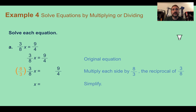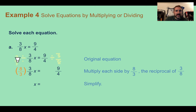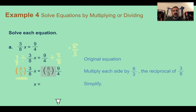Example 4: Solve equations by multiplying or dividing. In part A, we have 3 eighths times x equals 9 fourths. Since dividing by a fraction means multiplying by the reciprocal, instead of dividing both sides by 3 eighths, we multiply both sides by 8 thirds. On the left, 3 eighths times 8 thirds equals 1, leaving x by itself. On the right, we get 72 over 12, which equals 6. So x equals 6. When dealing with fractions, multiplying by the reciprocal is a good strategy.